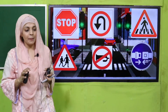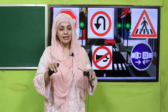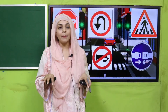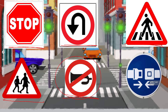Here are some traffic signs. This is the stop sign. This means U-turn. This means zebra crossing — I will explain that shortly. This means school ahead — you can see a mother walking with children. This means no horn. And this means fasten your seat belt when you are sitting in your car.